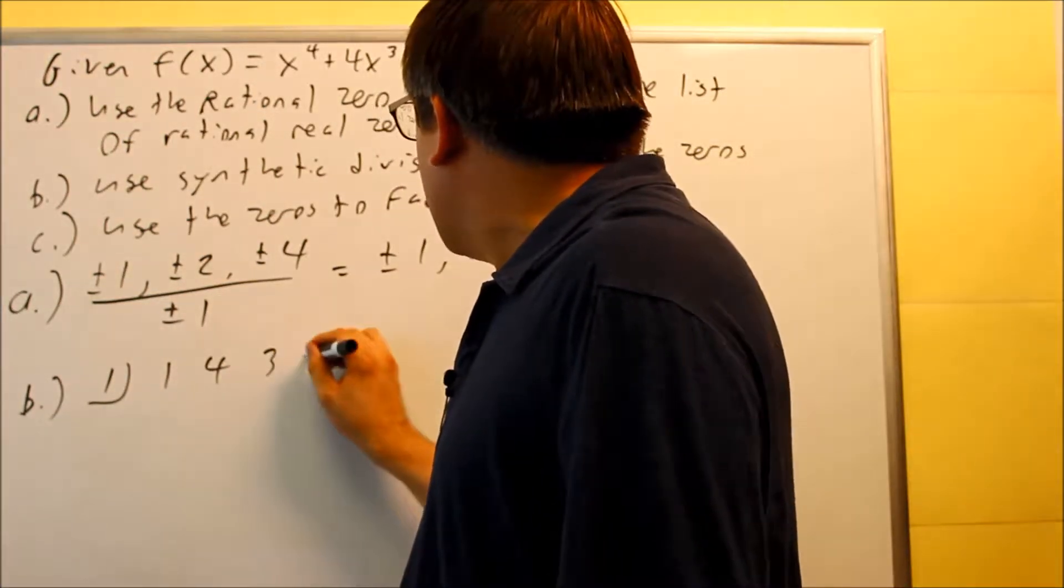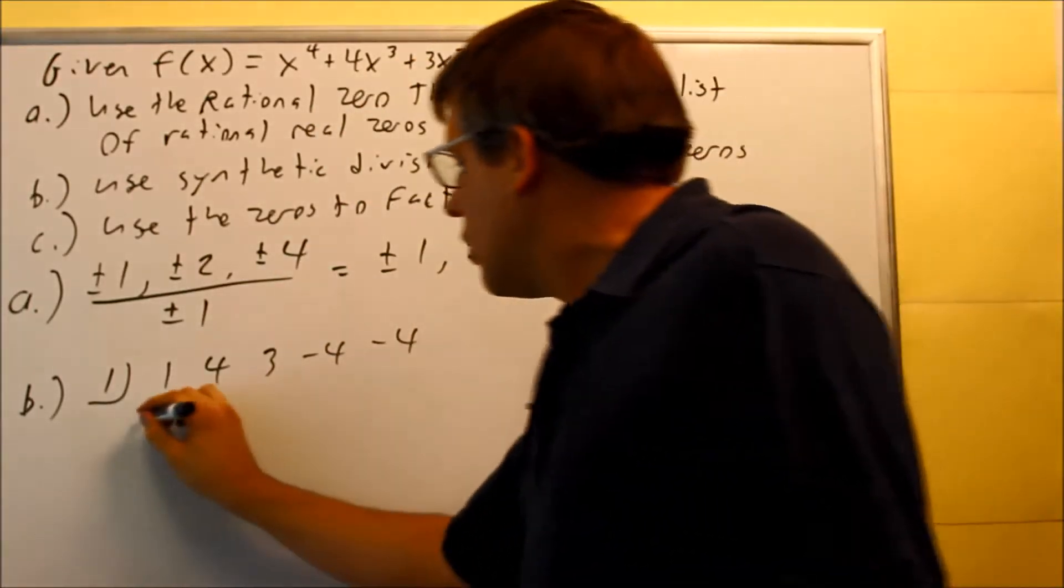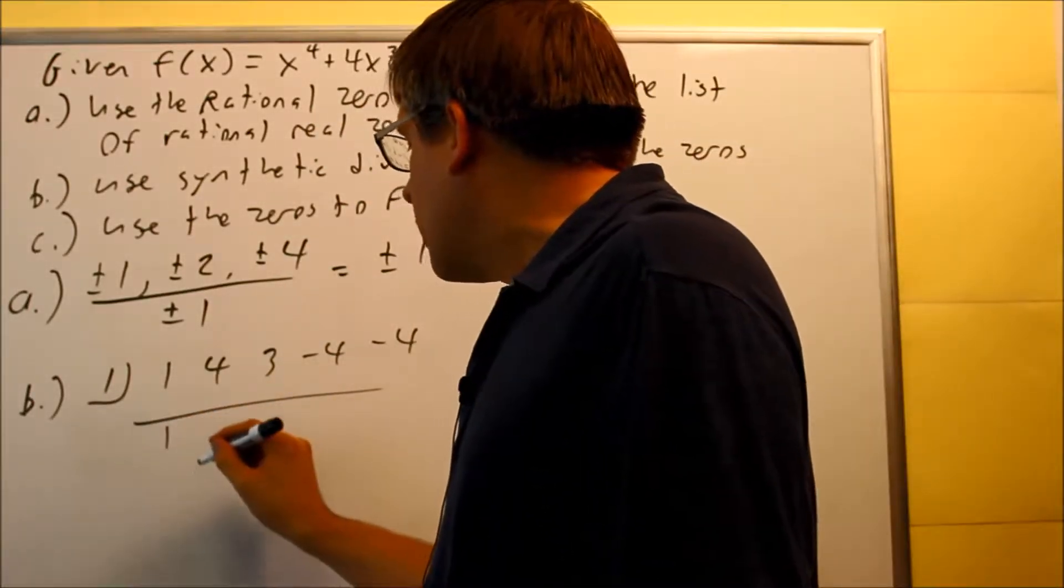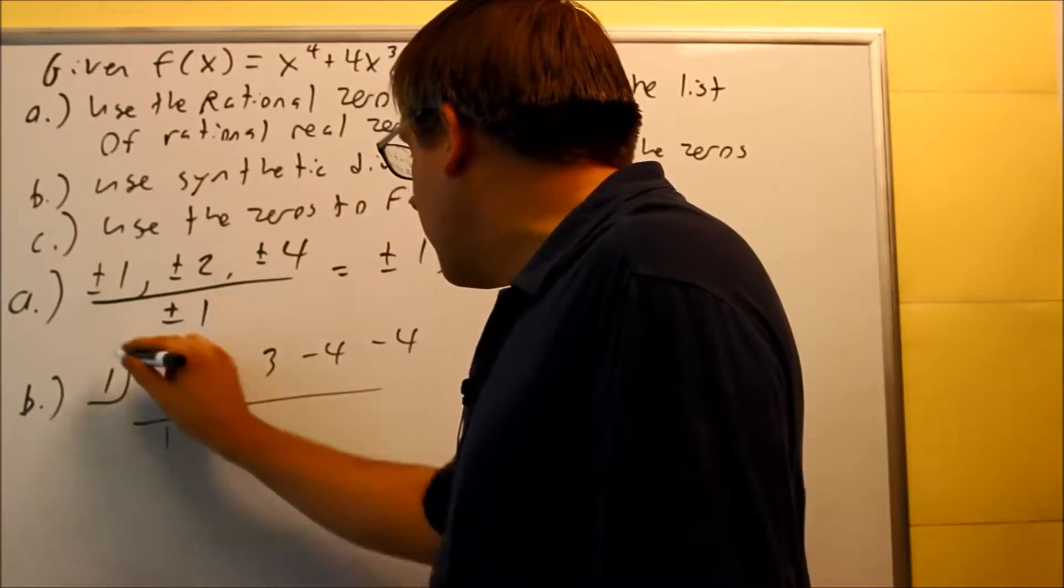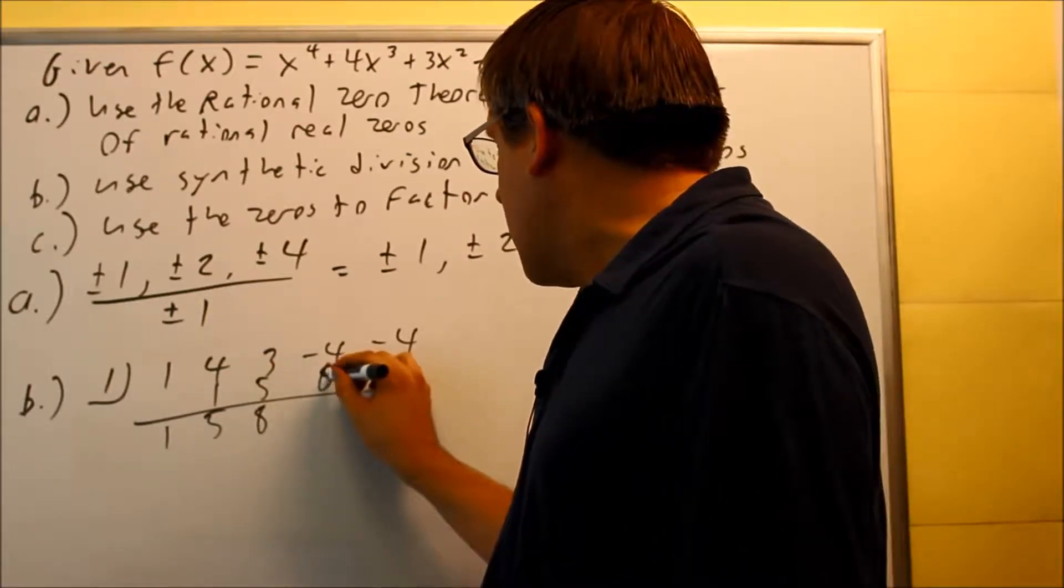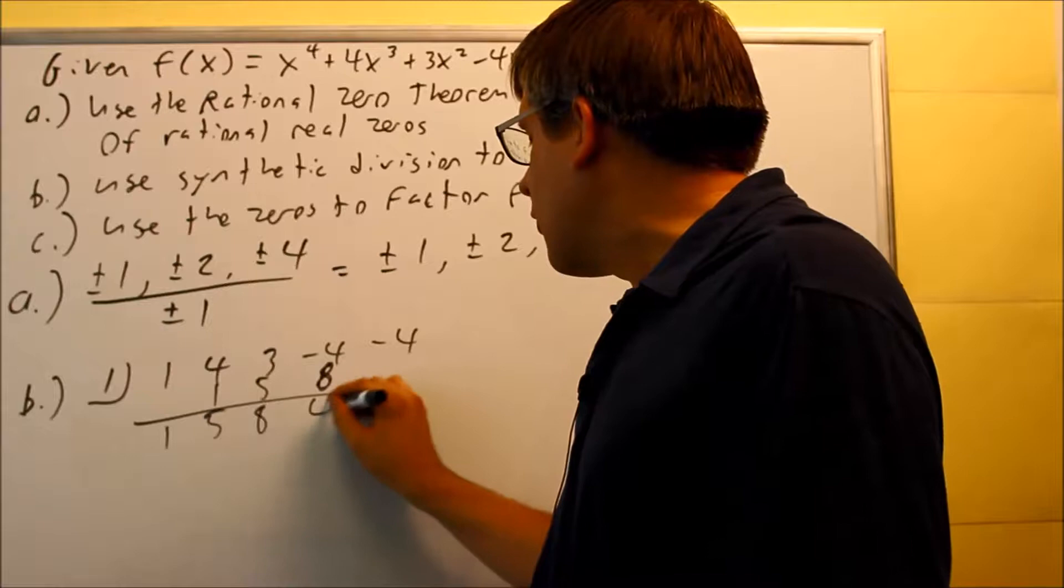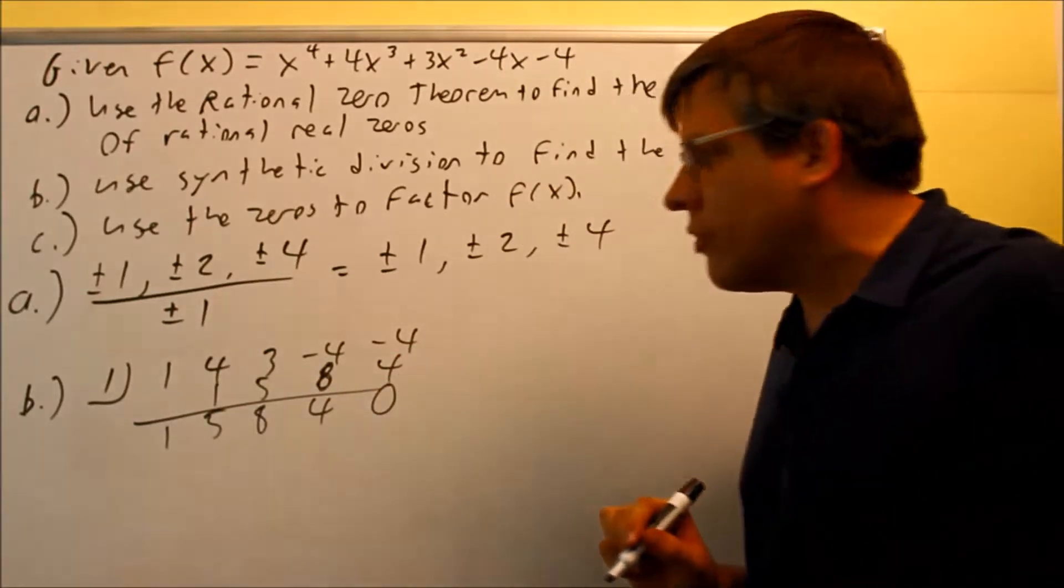One, four, three, negative four, and negative four. Those are our coefficients from the first one. We're going to do synthetic. We drop the one down. And you multiply. You get one here, five. You get five here, eight. Times one is eight there. Eight minus four is four. If you multiply that, you get positive four. You do get a zero for the first one.